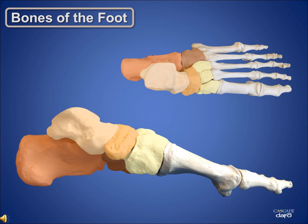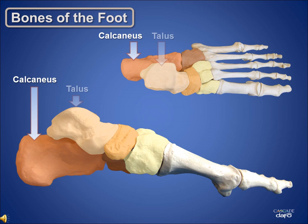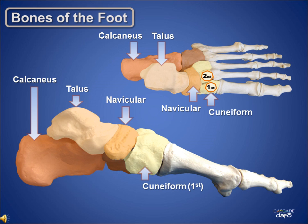Let's do a quick review: the calcaneus, the talus, the navicular, the cuneiforms, and the cuboid. Together these bones form what's known as the tarsus. Let's continue.